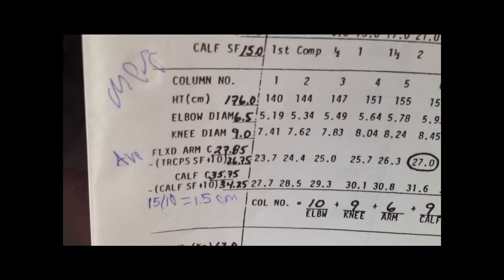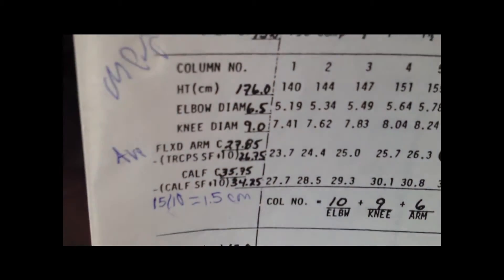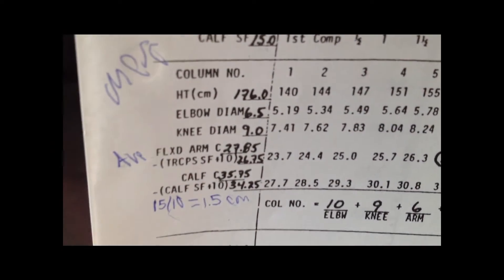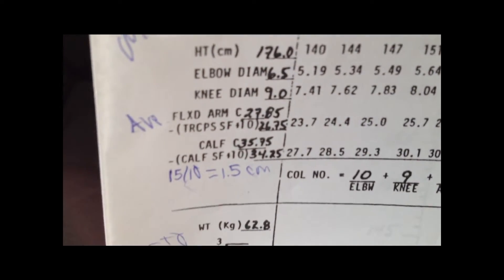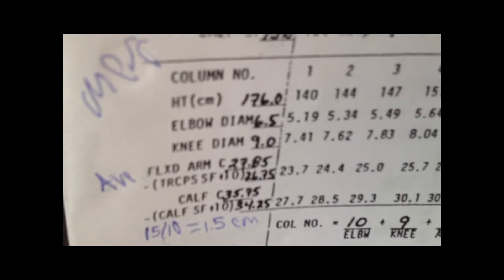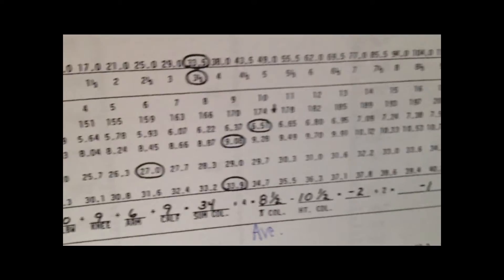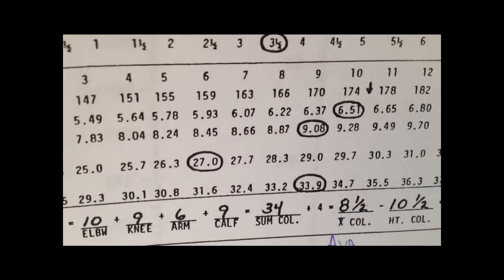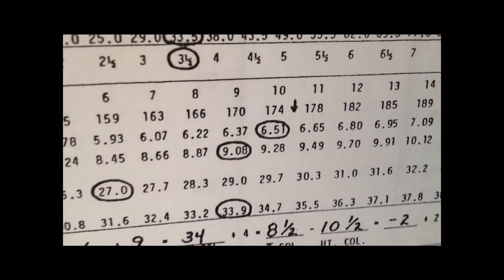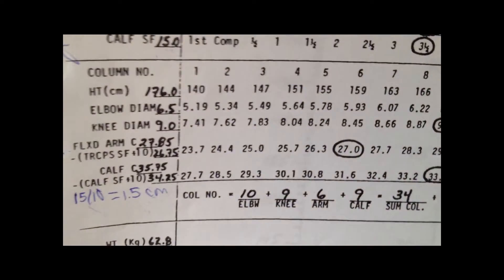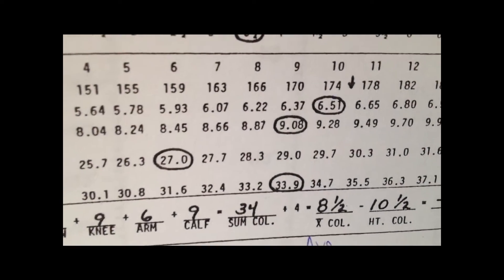The next component is mesomorphic. The information needed here is height in centimeters, elbow diameter, knee diameter, flexed arm circumference, tricep skin fold, and the calf circumference and calf skin fold. The numbers on the left side of the column are matched to the closest number on the right corresponding to them. You can see 176 for height — there's no particular column for it, so it falls in the middle at 10.5. Same for elbow diameter and knee diameter: 6.5 and 9, with the closest values being 6.51 and 9.08.